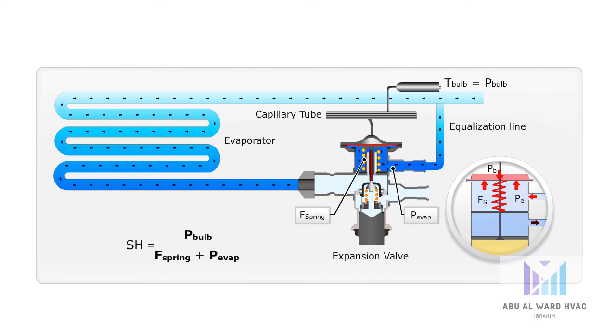If the load in the evaporator increases, the increasing superheat will in turn increase the bulb temperature or pressure. This will open the TXV orifice so more refrigerant is injected.